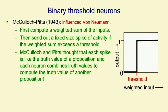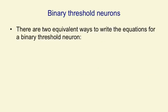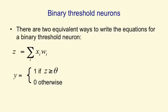For a binary threshold neuron, you can think of its input-output function as if the weighted input is above the threshold, it gives an output of 1, otherwise it gives an output of 0. There are actually two equivalent ways to write the equations for a binary threshold neuron. We can say that the total input z is just the activities on the input lines times the weights, and then the output y is 1 if that z is above the threshold, and 0 otherwise.